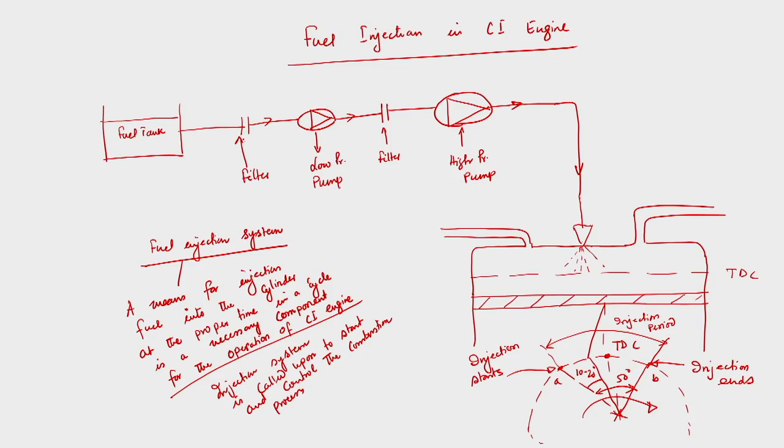We will now discuss what the objectives of having this fuel injection system are, and then what functional elements are needed to accomplish those objectives. We need to know that the fuel injection system is required to supply fuel at a proper time, and to supply the required amount of fuel at the proper time we need specific functional elements. Before that we need to know what are the objectives of having this fuel injection system.